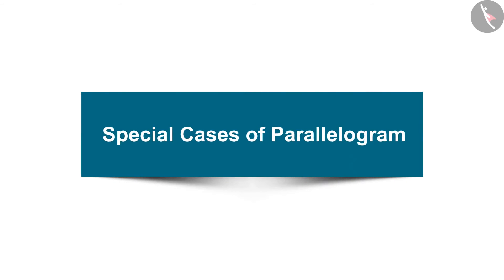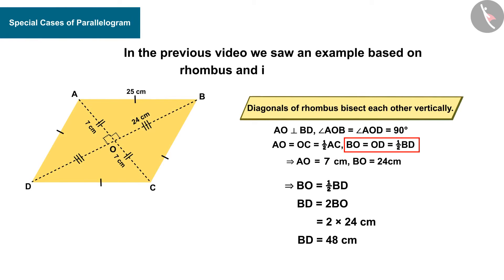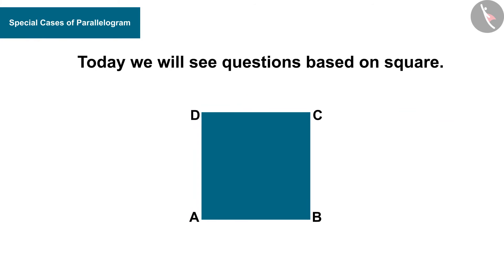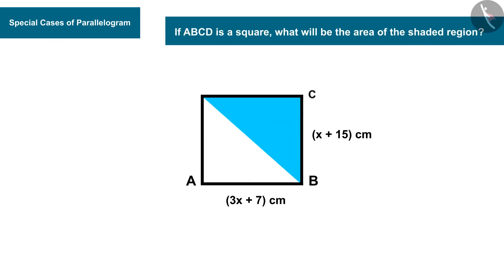Welcome to this video. In the previous video we saw an example based on rhombus. Today we will see questions based on square. If ABCD is a square, what will be the area of the shaded region?